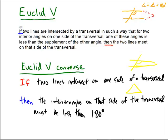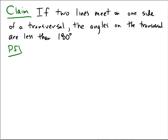Let's see if we can do this in neutral geometry. If two lines meet on one side of a transversal, the angles on that side of the transversal are less than 180 degrees. In neutral geometry.